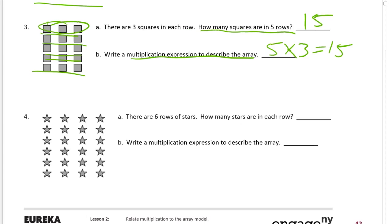Now, if you wrote three times five equals fifteen, that would be true, but it wouldn't go with that picture — that would describe a different array. We'd be talking about three rows of five. So we're really looking for five rows of three, or five times three.